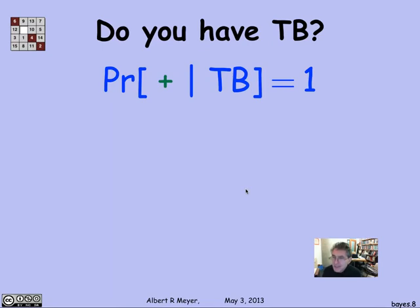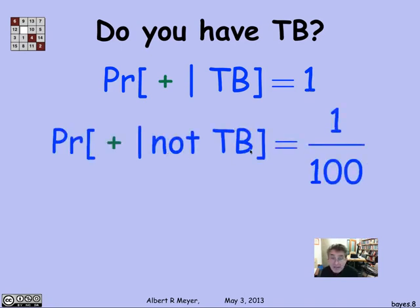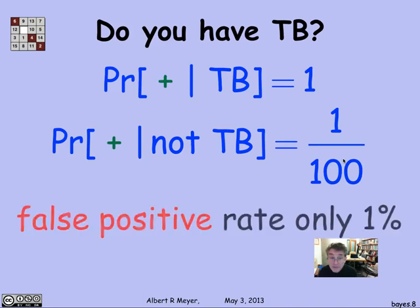What do we know about the test? Let's translate the information into the language of conditional probability. First, the test is guaranteed to get it right if you have TB, so given that you have TB, the probability that the test returns a positive result is 1. Given that you don't have TB, the probability that the test will say you do have TB is only 1 in 100, because 99% of the time it correctly says you don't have TB, and 1% of the time it says you do. This is called the false positive rate — falsely claiming you have TB when you don't — and that rate is only 1%.